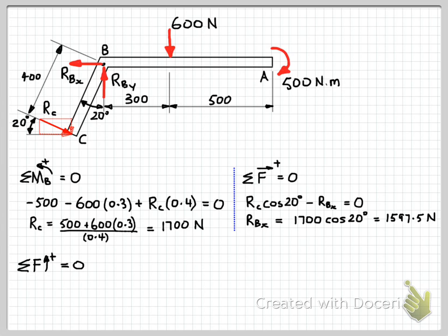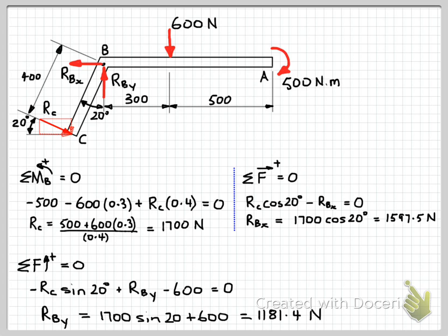Alright, now let's apply our third equation of equilibrium. Sum of the forces in the vertical direction equals zero. So again, we have the vertical component of our force RC. So in this case, RC sin 20 degrees. And it's in the negative direction, so acting downwards. And we've indicated here that positive is upwards. We also have RBY, which is our only remaining unknown, and our 600 Newton applied load. Again, sum of the forces, all equal to zero. Again, do your algebra, rearrange the equation, and solve for RBY, and we get 1181.4 Newtons.